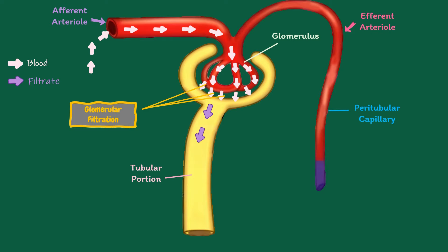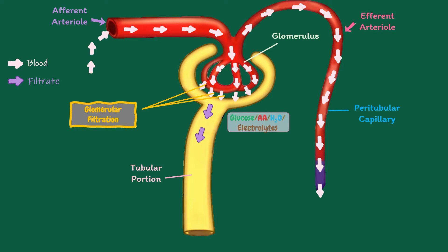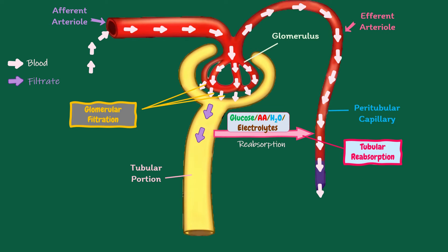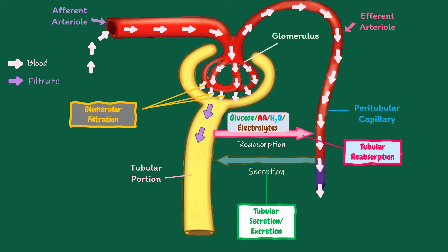Filtrate from Bowman capsule passes through the tubular portion of the nephron. Remaining blood moves to peritubular capillaries while passing through the tubule. The filtrate undergoes various changes, both in quality and in quantity. Many wanted substances, like glucose, amino acids, water, and electrolytes, are reabsorbed from the tubules. This process is called as tubular reabsorption, and some unwanted substances are secreted into the tubule from peritubular blood vessels. This process is called as tubular secretion or excretion.